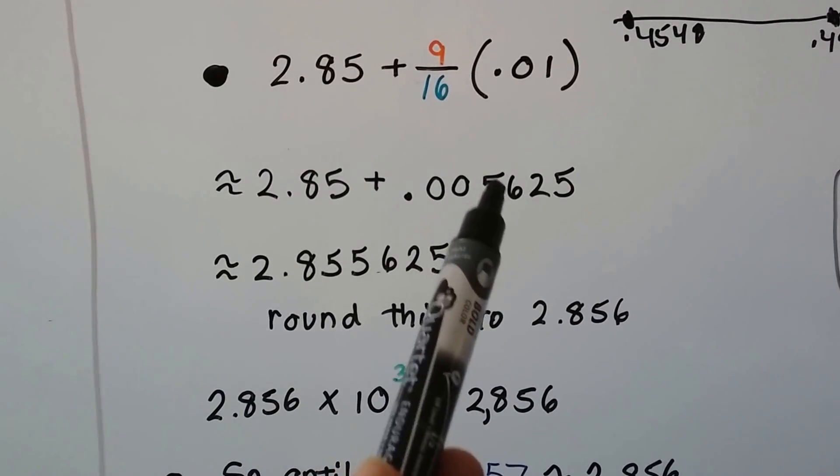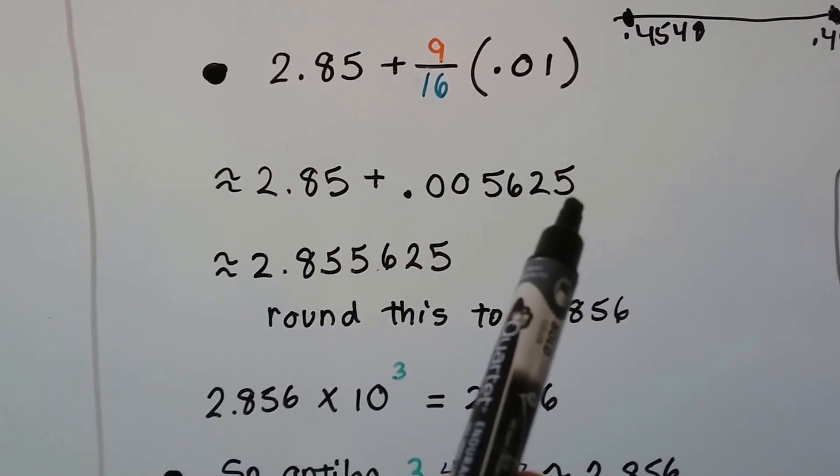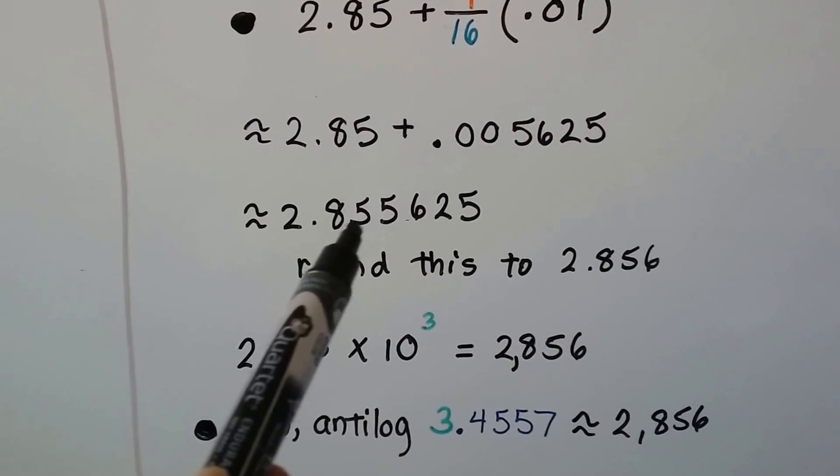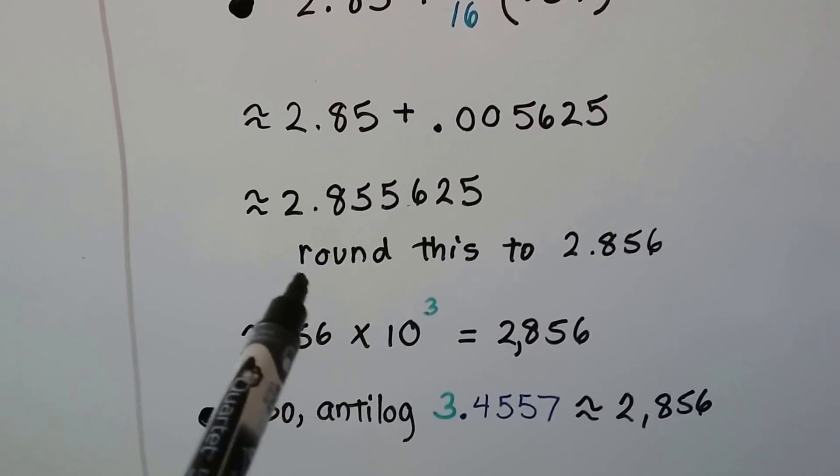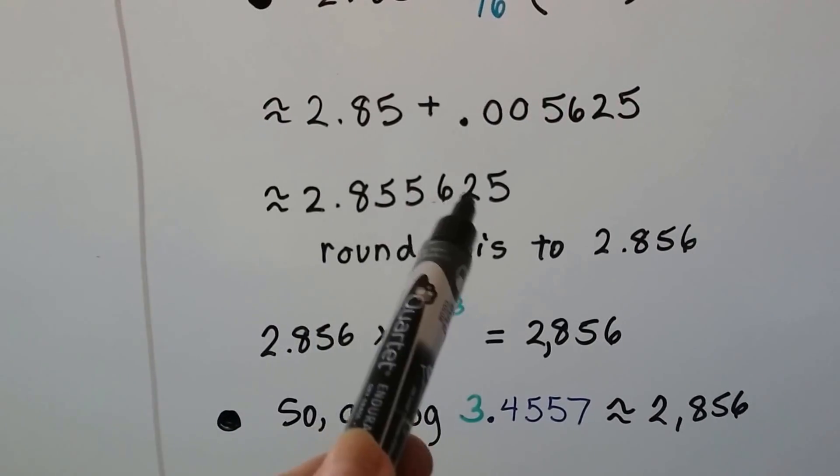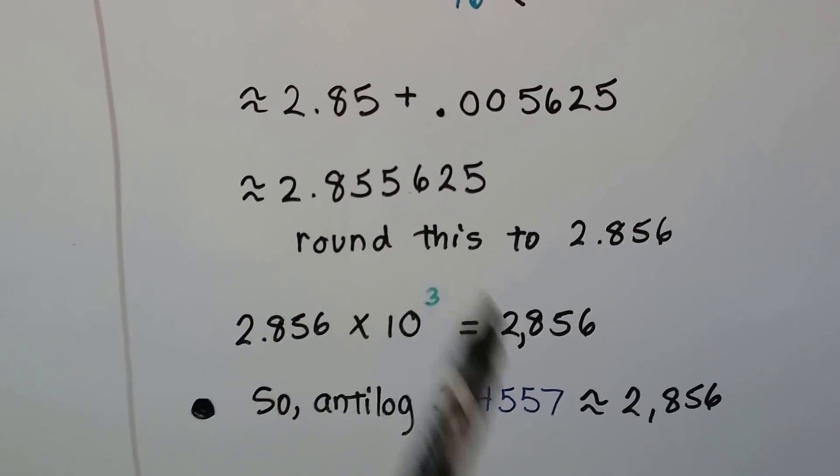This is .005625 on the calculator. We're going to add it to this. We get 2.855625. I'm going to round that to 2.856. That 6 tells the 5 to go up to a 6, doesn't it?